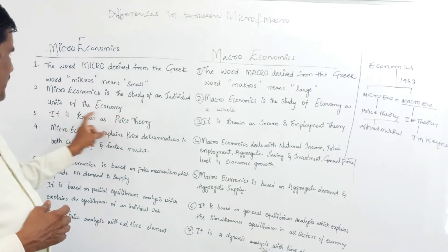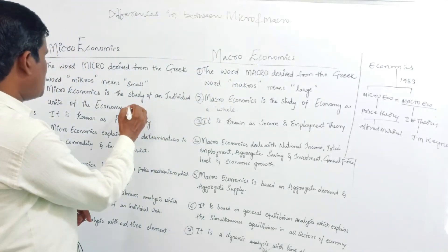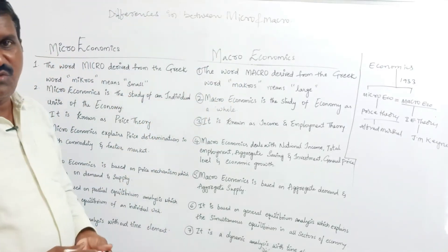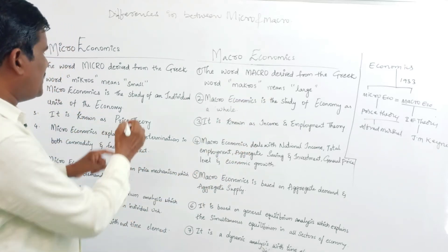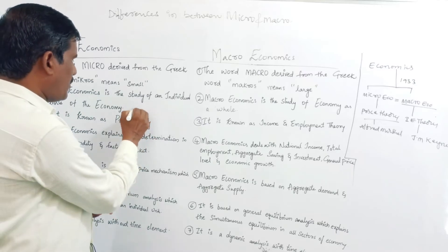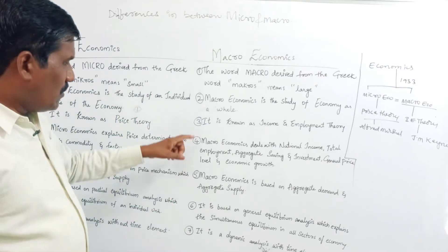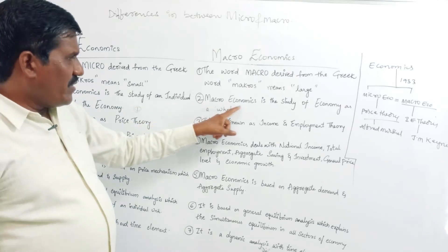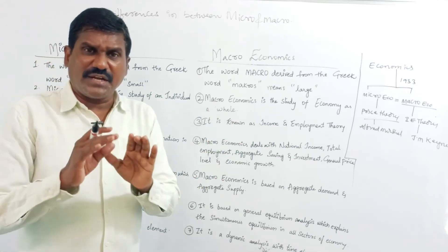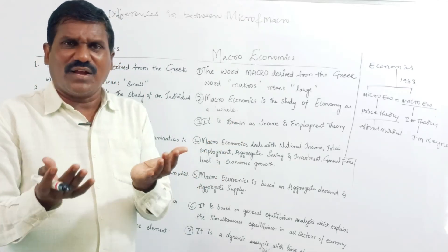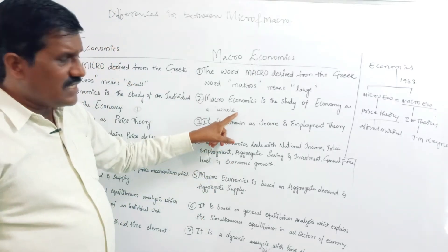Microeconomics is the study of an individual unit of the economy — a single unit. We are discussing just one unit. Macroeconomics is the study of an economy as a whole — the complete economy, where nothing is left out.